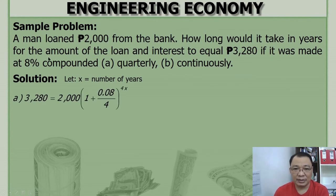F is equal to P times 1 plus I raised to n. For letter A, compounded quarterly, I is R over M, which is 0.08 over 4. And then the number of periods is 4 times the number of years. Divide by 2,000. 3,280. You will get this one. The 0.02 is 0.08 over 4, that's 0.02 plus 1, which is 1.02.